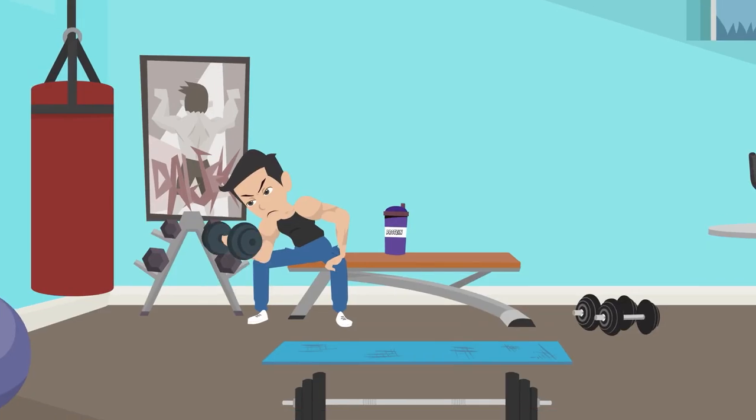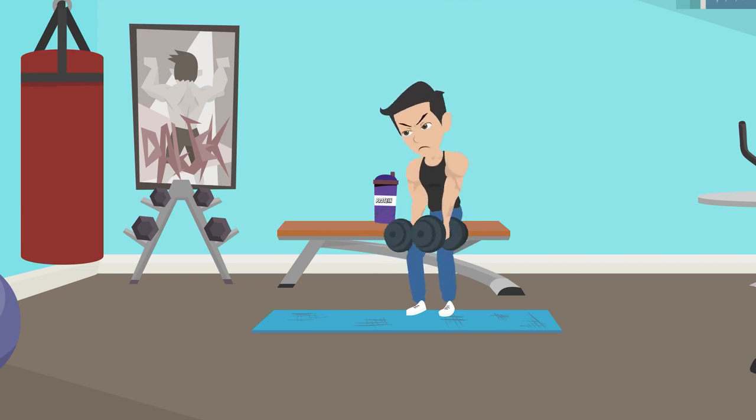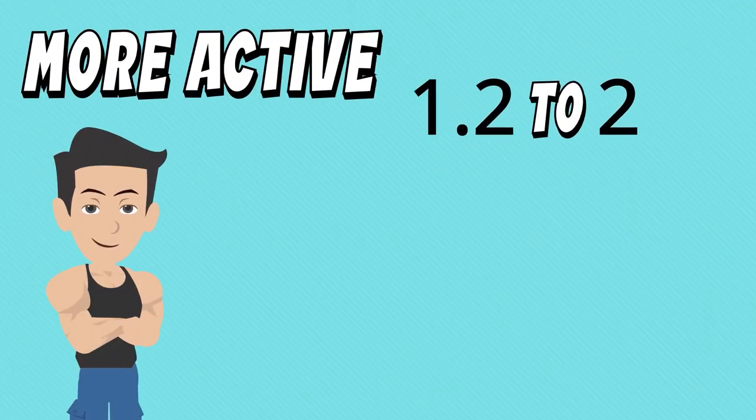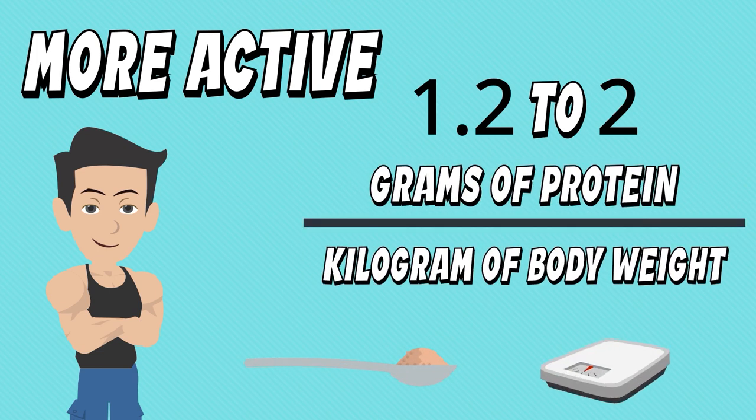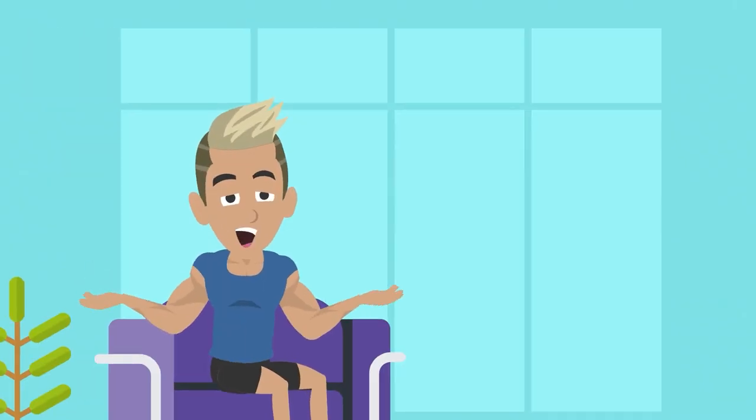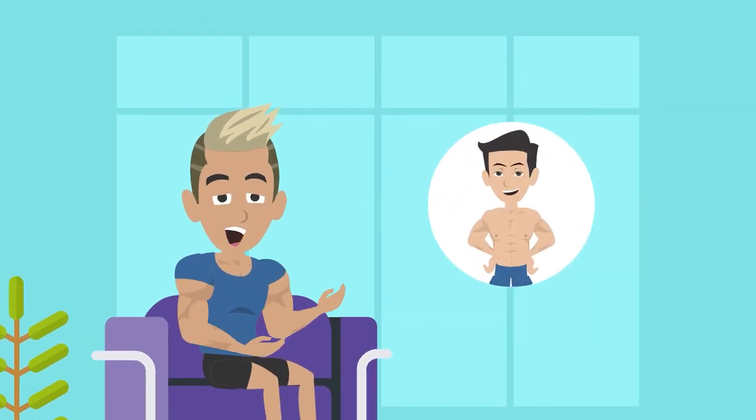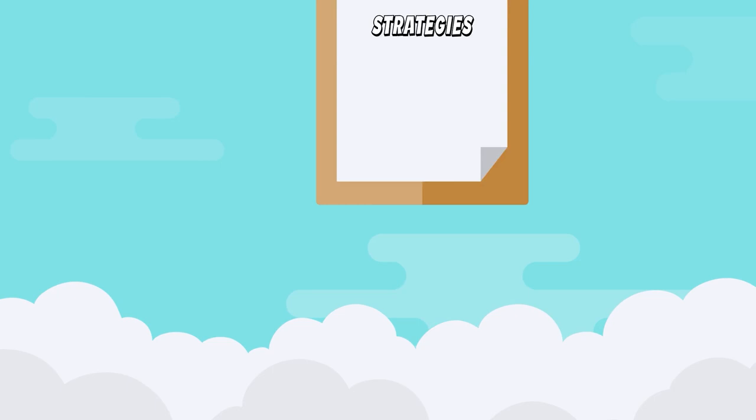The general guideline for sedentary individuals is around 0.8 grams of protein per kilogram of body weight. If you're more active and want to make serious gains, aim for a higher range like 1.2 to 2 grams of protein per kilogram. Remember, these are just starting points and you might need to adjust based on your individual needs and goals.